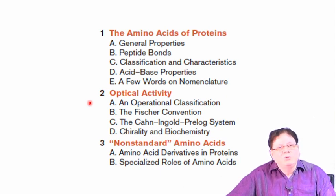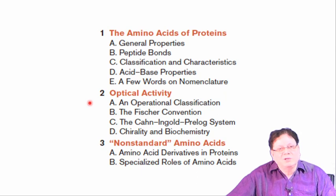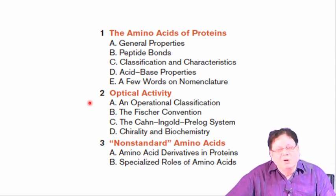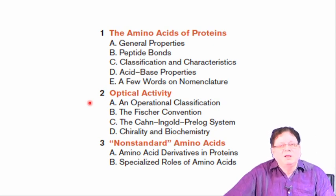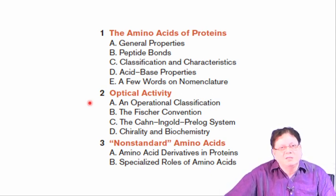If you want to convert this into the RS nomenclature system, out of these 19 amino acids, 18 belong to the S configuration, and only cysteine — because of a priority order changeover — L-cysteine becomes R-cysteine. So 18 are basically S amino acids.